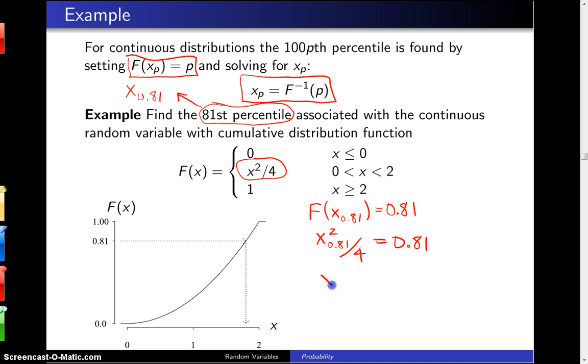When you multiply both sides by four, you get 3.24. And finally, when you take the square root, and we only need the positive square root in this case, you get 1.8. And that is the 81st percentile.